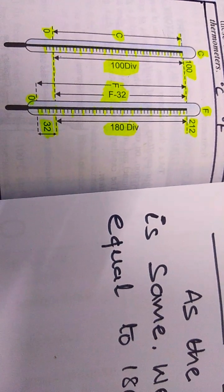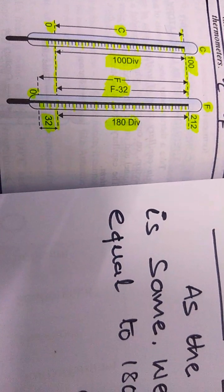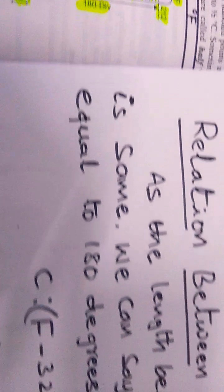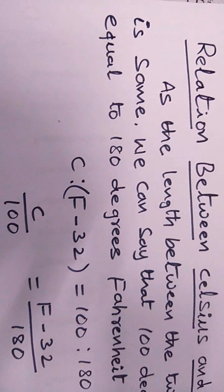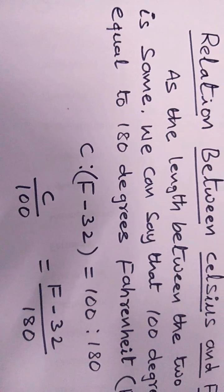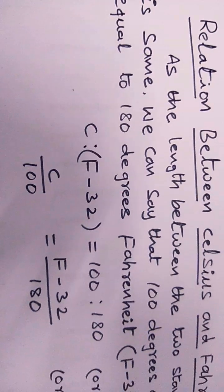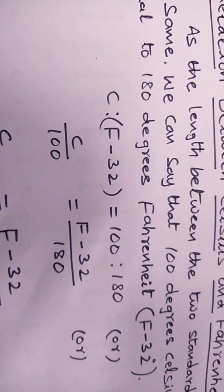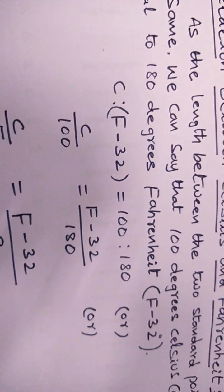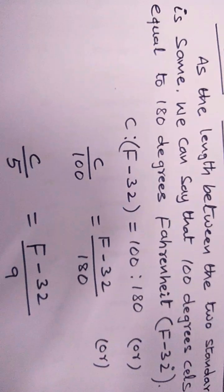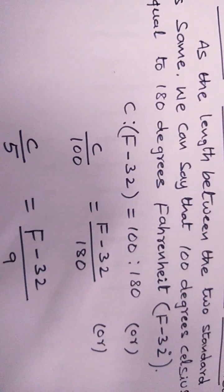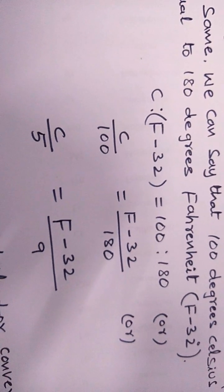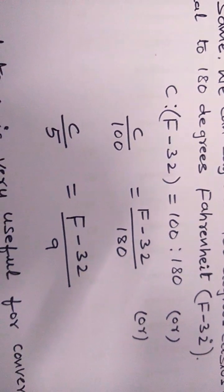Centigrade, Celsius, and Fahrenheit thermometric scales are given. The relation between the Celsius scale and Fahrenheit scale: since the length between the two standard points is the same, we can say that 100 degrees Celsius is equal to 180 degrees Fahrenheit. That is, C is to (F minus 32) equal to 100 is to 180.